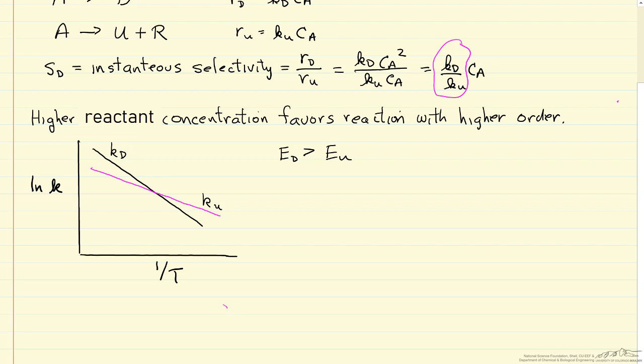Therefore, as we raise the temperature—and temperature is increasing in this direction—our rate constant gets larger, more for the desired reaction. So we're going to favor the desired reaction more at higher temperatures.